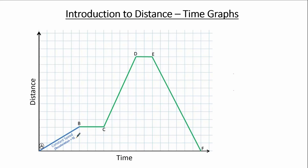The next stage of our journey is B to C. We notice that there is no change in the distance, so between B and C we are stationary — the speed between B and C equals zero. The stage C to D is like stage A to B: between C and D we are travelling with constant speed, and the acceleration between C and D equals zero.